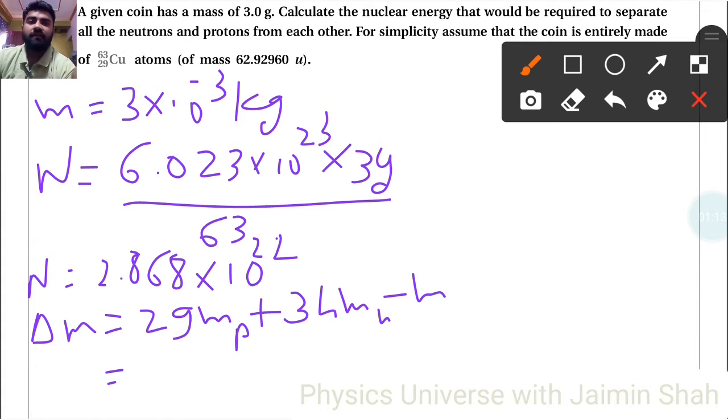So that will give us 0.591935 amu, right. Now see, for this, how many total atomic mass are there?